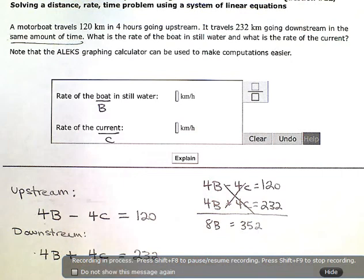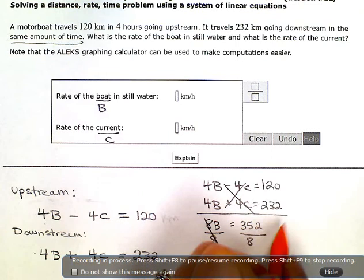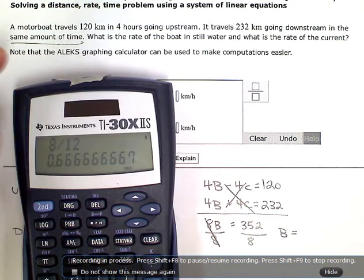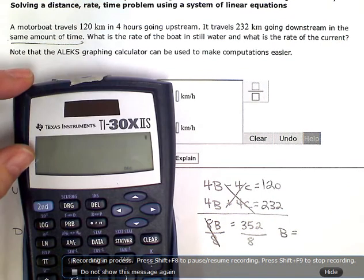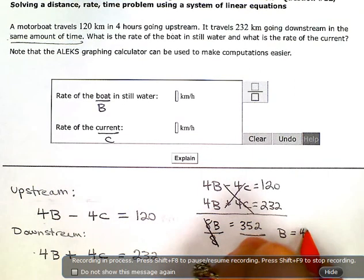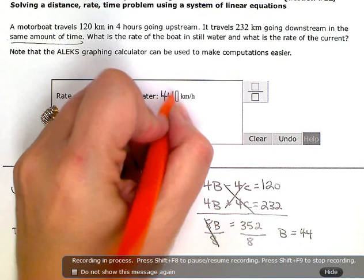And then divide both sides by 8. And I know B is going to be equal to 352 divided by 8, or 44. So the boat was going 44 kilometers per hour.